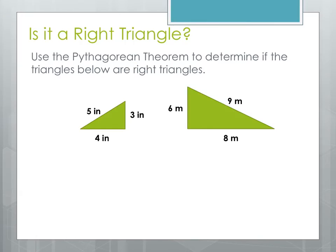Now we're going to use the Pythagorean Theorem to test if these triangles are right triangles or not. If we plug in the numbers and get a true statement back, then it's a true right triangle. But if we get a false statement, that means it's not a right triangle. We'll use the formula A squared plus B squared equals C squared, since there will be fewer steps and we don't have to take any square roots.